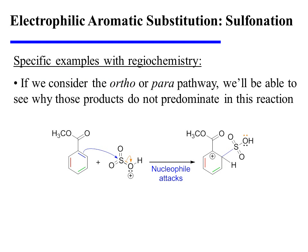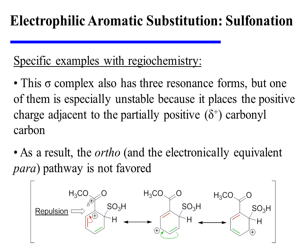If we consider the ortho- or the para-pathway, we'll be able to see why those products do not predominate in this particular reaction. The initial attack of the ring on the potent electrophile could form an ortho-substituted sigma complex, and this sigma complex also has three resonance forms that delocalize the charge around the ring. However, notice that one of them places the carbocation directly adjacent to the carbonyl carbon of the ester substituent.